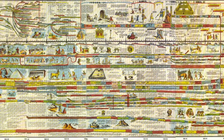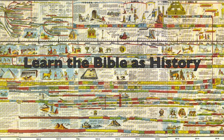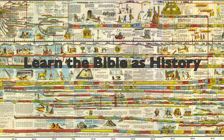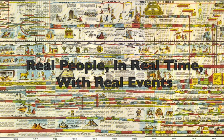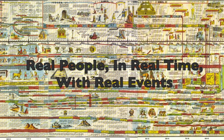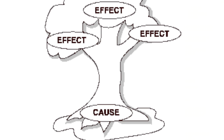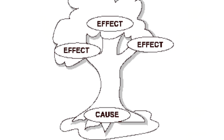In Year One, we teach the Bible chronologically as real history. Students meet real people in real time with real events set into the context of world history. Students reason and relate from cause to effect, giving ownership and mastery to their studies.